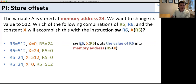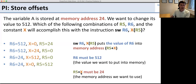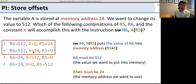Store word puts the value of R6 into memory at the location computed as the constant x plus the register value in R5. So we need R5 plus x to equal 24 (the destination address) and R6 to equal 512 (the value). There are two ways: x equals 0 with R5 holding 24, or x equals 24 with R5 holding 0. Both allow us to store the data we want into that location.